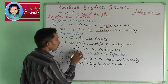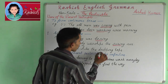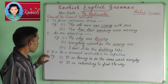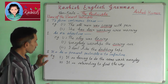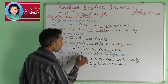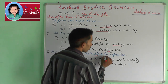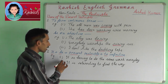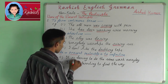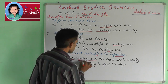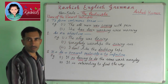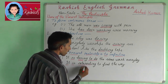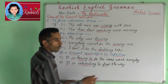Next: 'I don't like the dripping taps.' Third, it is + adjective + present participle + to infinitive — for example: 'It is boring to do the same work every day.' Next: 'It is interesting to find the way.'